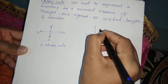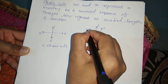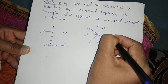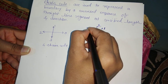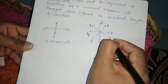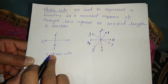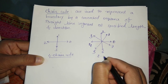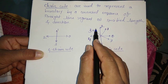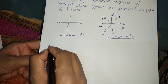There is also an 8-chain code which includes diagonal elements, with codes 0 through 7. You use the 4-chain code for basic shapes, or the 8-chain code when diagonal points are present in the boundary region of the shape.